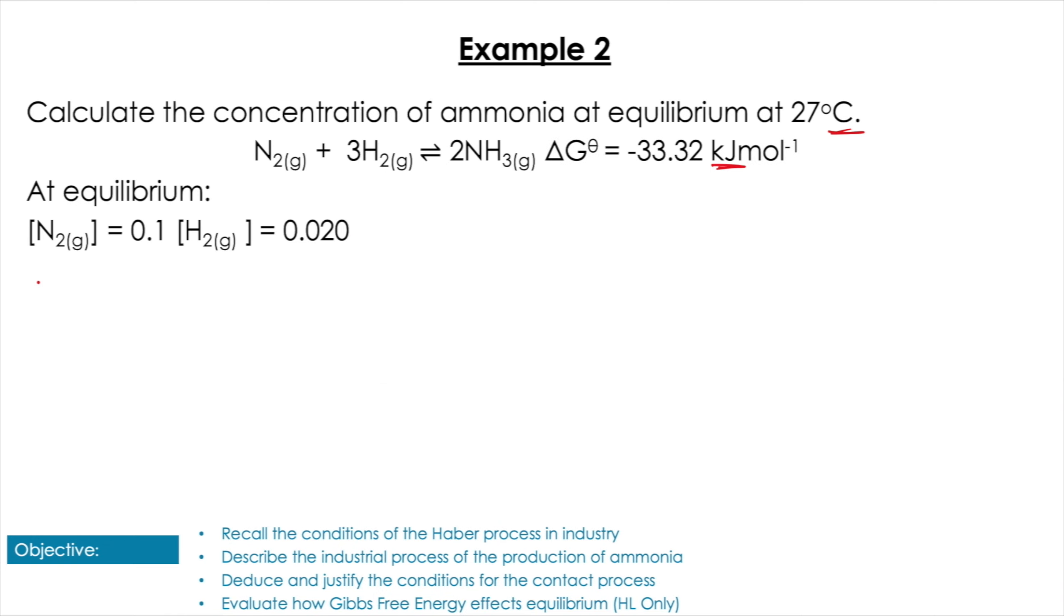Let's have a look at a slightly more involved question where it's asking us to calculate the concentration of ammonia at equilibrium. It gives us the concentration of the other components of the reaction, the temperature, and the energy change. So we're still going to be using that same equation: ΔG° = -RT ln K. And in that sense, this question is going to be similar to the last one. We're going to plug in our values, remembering to times the ΔG by a thousand because it's in kilojoules per mole. So -33,320 = -RT ln K.